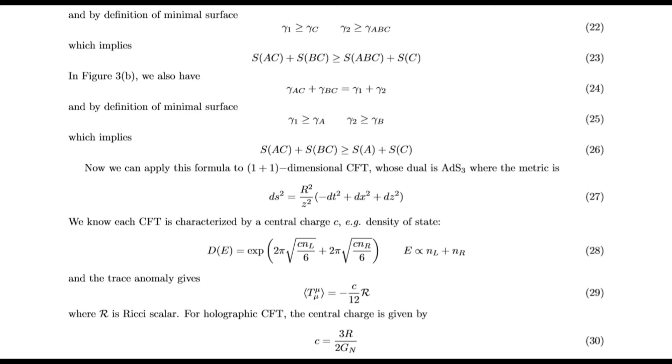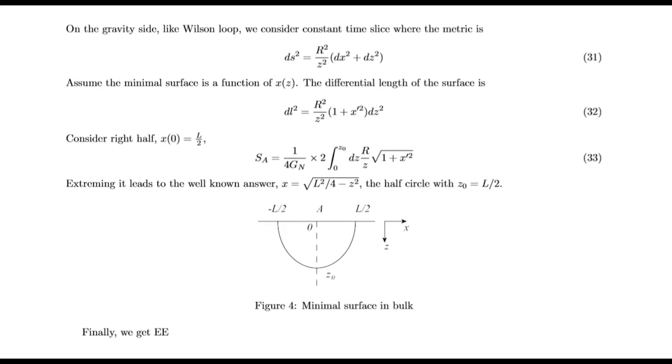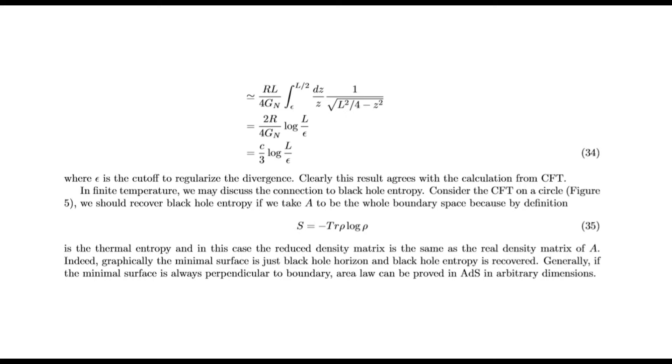Now we can apply this formula to 1+1 dimensional CFT whose dual is AdS₃, where the metric is ds² = (L²/z²)(dz² - dt² + dx²). We know each CFT is characterized by a central charge c, which determines the density of states. The trace anomaly gives ⟨T^μ_μ⟩ = (c/12)R, where R is the Ricci scalar. For holographic CFT, the central charge is given by c = 3L/(2G_N). On the gravity side, consider a constant time slice. Assume the minimal surface is a function z(x). The proper length of the surface is calculated. Extremizing leads to the well-known answer, a half-circle centered at z=0. Finally, we get entanglement entropy S_A = (c/3)log(L/ε), where ε is the cutoff to regularize the divergence. Clearly, this result agrees with the calculation from CFT.